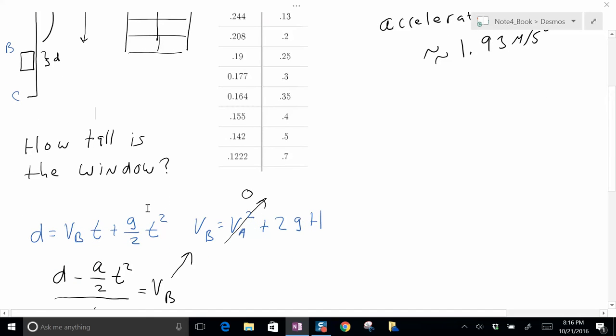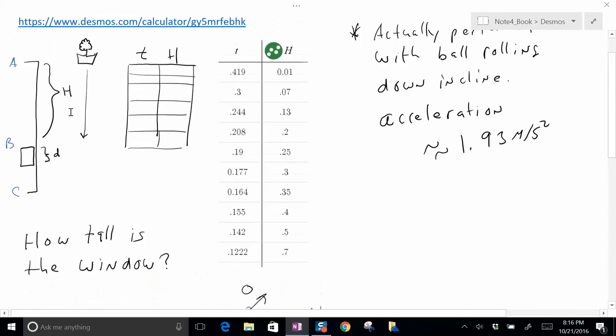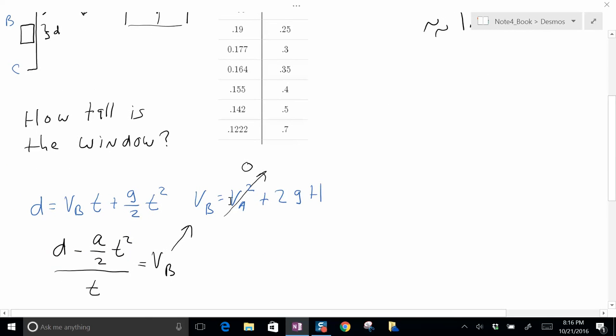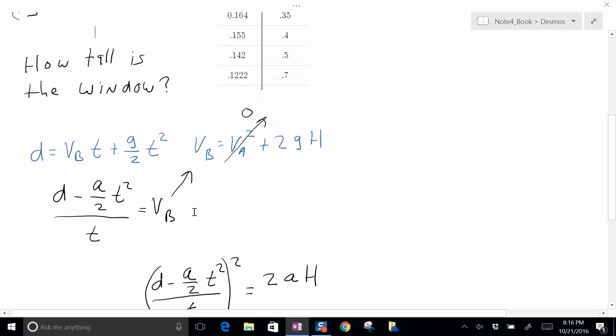So you can use the d is vit plus one half at t squared equation to work out what the velocity was here, or the velocity at b. And then this velocity at b is the final velocity from when you go from a to b, so you can use the vf squared equation. So if you solve for vb, because remember it starts off at zero, you get vb is square root of 2gh.